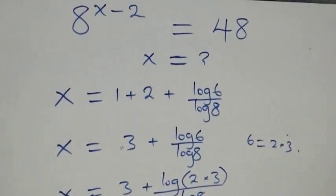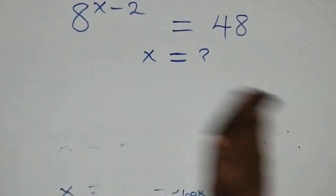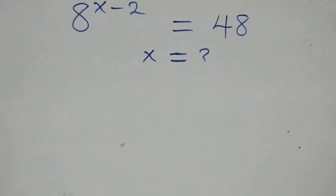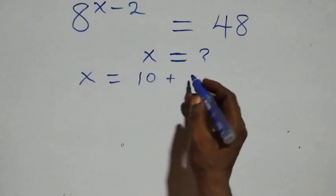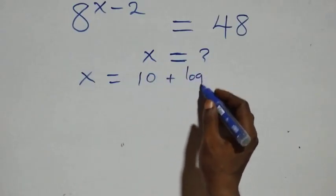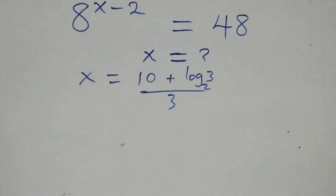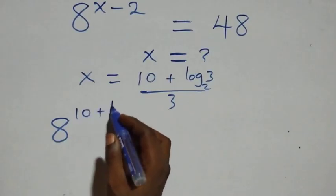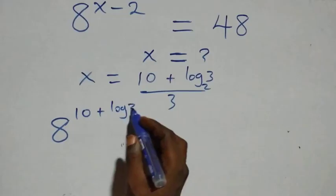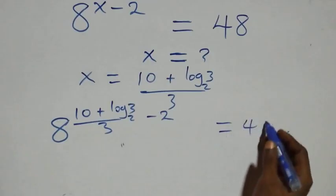Now let's verify that this satisfies the original problem by substituting x equals ten plus log three base two, all over three, back into eight raised to power x minus two equals forty-eight.